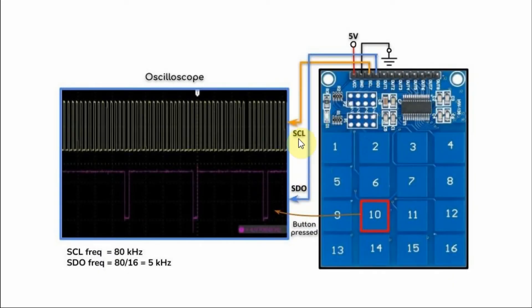This diagram shows the serial clock and the serial data lines connected to a scope. So here we have the clock signal running at 80 kHz, and here we have the SDO line. So when we press a key, let's say key 10, then the SDO line goes from logic 1 to logic 0, indicating that a key has been pressed.